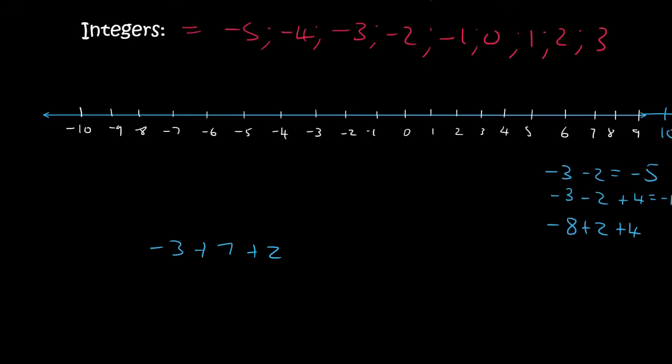Minus 3 plus 7 — you go 7 to the right — 1, 2, 3, 4, 5, 6, 7 — and then you plus 2 more — 1, 2 — and so we end up with 6.